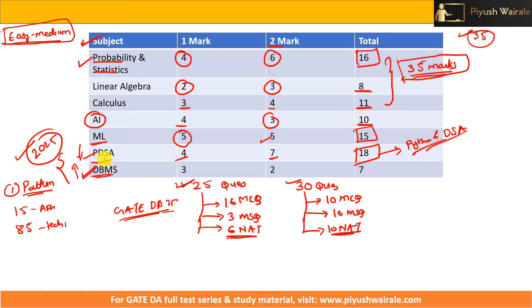Don't think that because DBMS came for just seven marks this year, next year will follow the same pattern. I think PDSA weightage will decrease and DBMS will increase. These two topics need to be corrected, and DBMS is going to show an early increase next year. In total, the technical section is 85 marks.